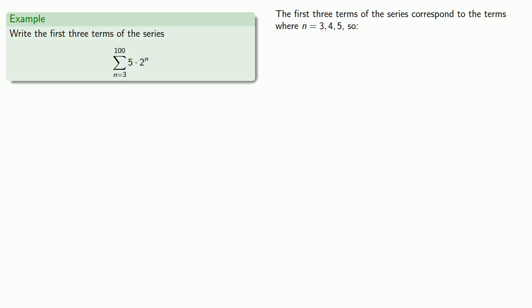So we'll let n equals 3, 4, and 5 to find the terms of the series. These are the first three terms of our sum, but we're omitting a bunch of them, so that will include the dot dot dot.